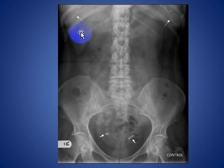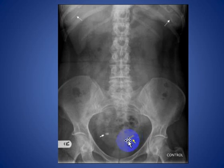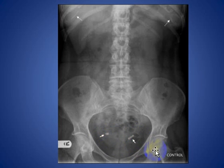Here you see costal cartilage calcification in a female patient, and there are bilateral tubal ligation clips seen in the pelvis, indicated by the arrows.